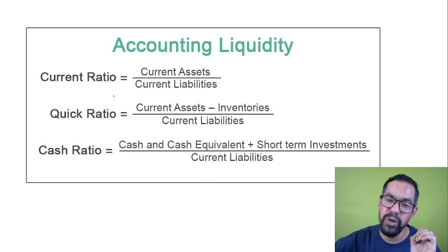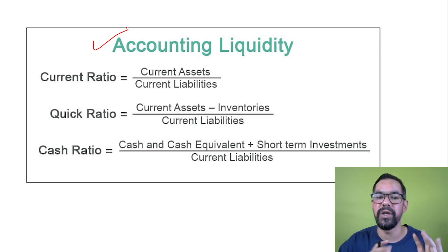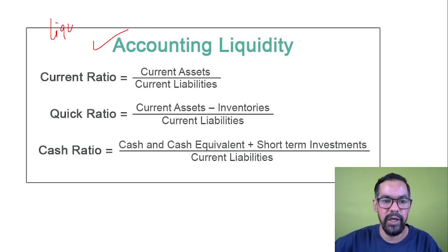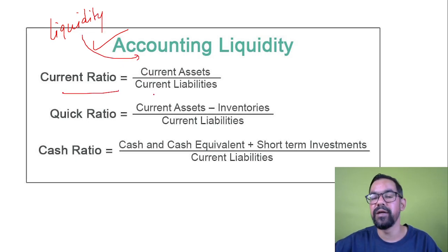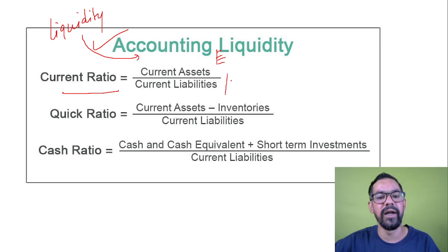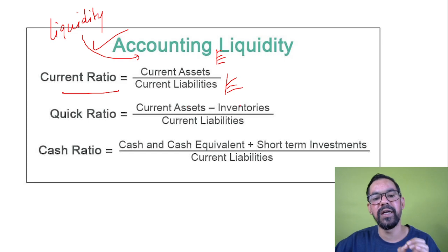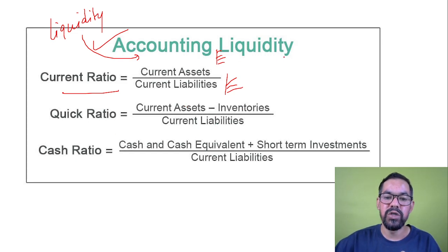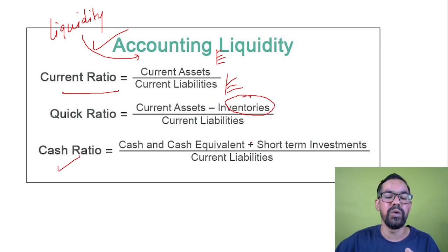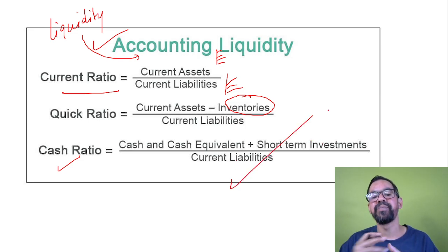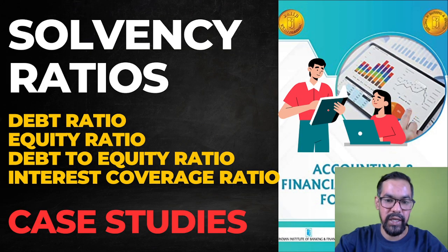To summarize the liquidity ratios: Current Ratio = Current Assets ÷ Current Liabilities. Quick Ratio = (Current Assets − Inventories) ÷ Current Liabilities. Cash Ratio = (Cash + Equivalents + Short-term Investments) ÷ Current Liabilities. These are the three most important liquidity ratios that examiners frequently ask about. Remember the formulas and understand which entries go under current assets and current liabilities.